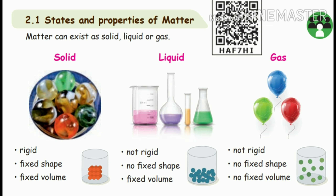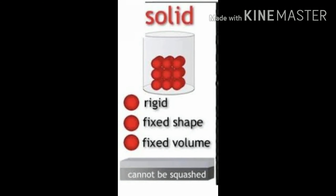Now we are going to discuss about the properties of solid. It is rigid — adhavudu, adhudu particles eilala, rambu tight a packa hii irukkou. And it has a fixed shape. Adhukku oru shape irukkou, and the shape maathamudiyadu. For example, a chair — its shape cannot be changed. So it has a fixed shape.